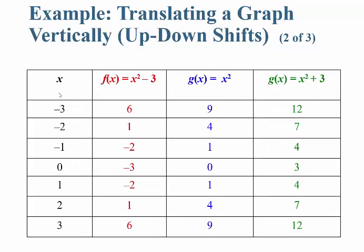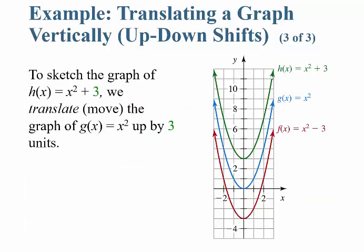When x is equal to negative 3, if you plug it in, you get 6, then 9, then 12 — for f, g, and h respectively. The difference is that the minus 3 from just x squared is moving the graph down 3, and the plus 3 is moving it up 3.